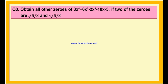Obtain all other zeros of the polynomial 3x⁴ plus 6x³ minus 2x² minus 10x minus 5, if 2 of the zeros are √(5/3) and -√(5/3). If you observe the given polynomial, can you say what is the degree of this given polynomial? Since the highest exponent of the variable is 4, the degree of this given polynomial is 4. Since the degree of the polynomial is 4, there may be 4 zeros. But we have been given only 2 zeros, so we have to find 2 more zeros.